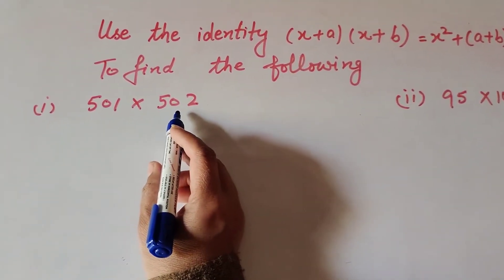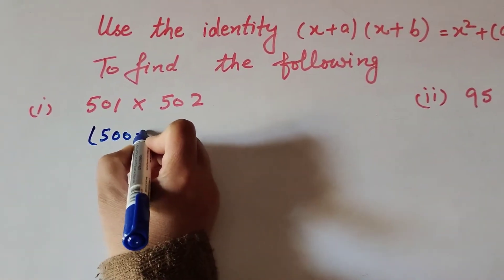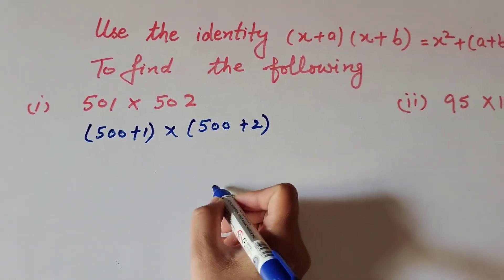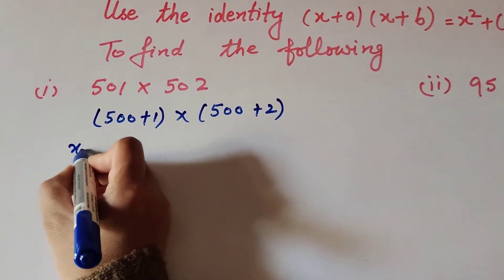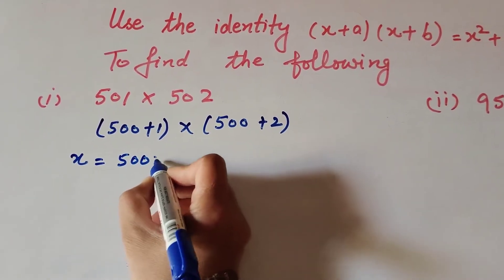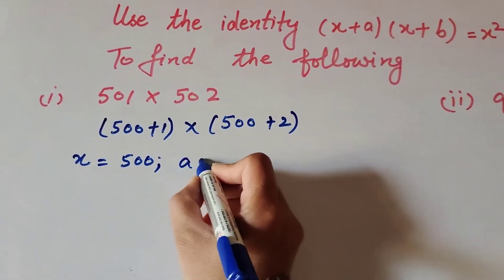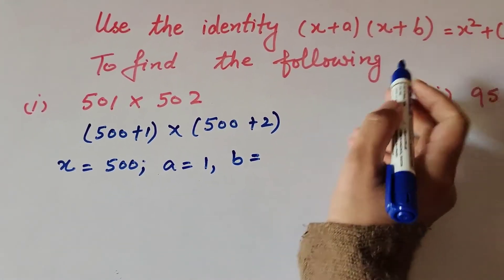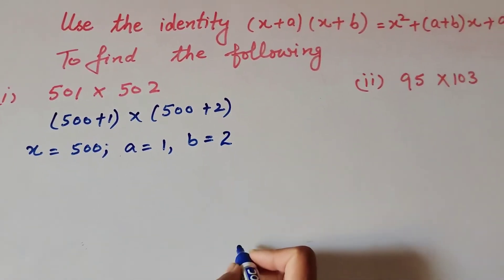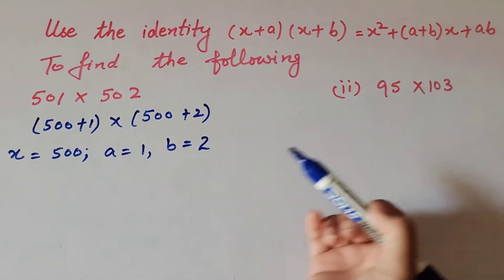501 × 502 can also be written as (500 + 1)(500 + 2). Now we use the identity where x = 500 — this number is common. So x = 500, a = 1, and b = 2. Now we put these values into x² + (a + b)x + ab.